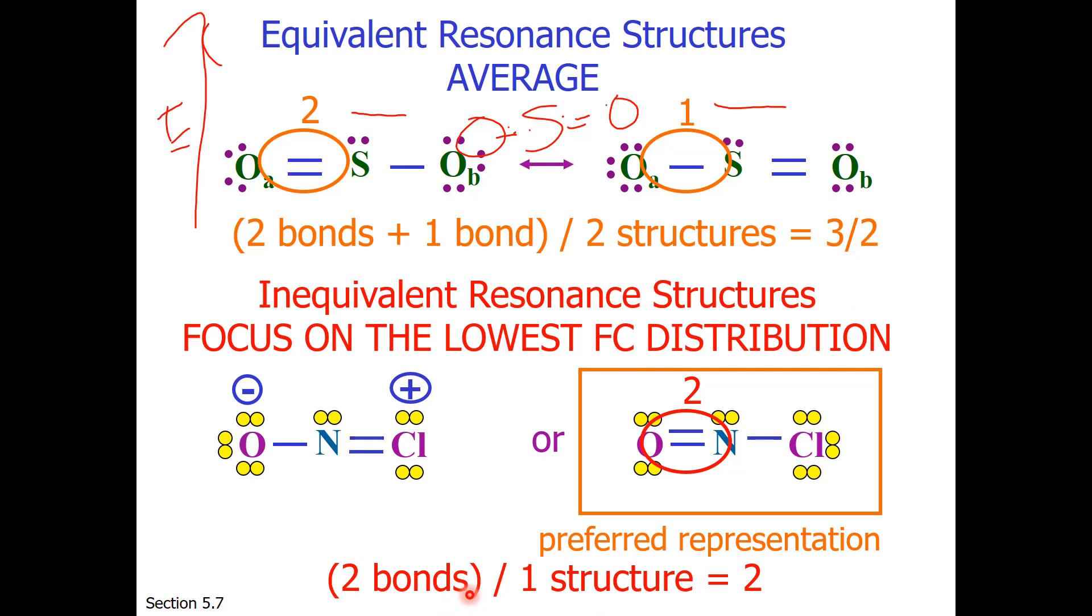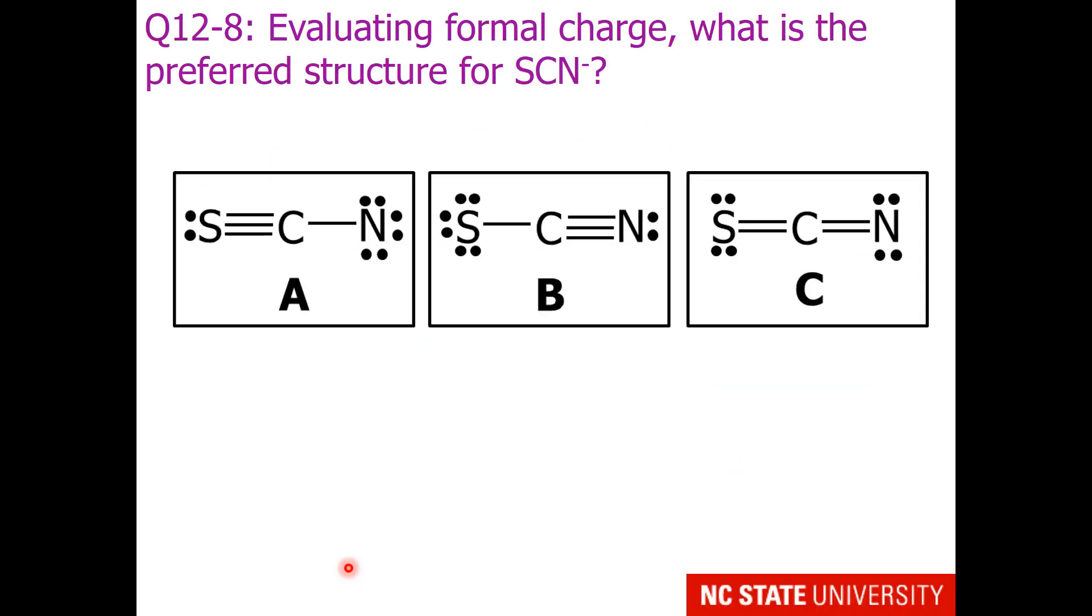For the bottom example, I have 2 bonds averaged in 1 structure to give me a bond order of 2. So this is an example where formal charge can be used to determine the preferred structure for thiocyanate. So since the question has us looking at formal charge, we're going to need to get the formal charge of all 9 atoms.